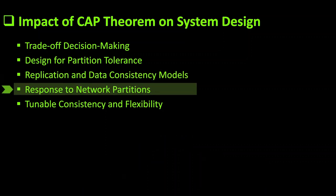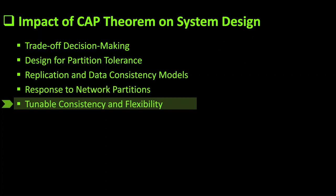Moving on to response to network partitions: systems must decide how to behave during network partitions. AP systems may continue to operate with potential inconsistencies, while CP systems may block or fail some operations to maintain data correctness. Lastly, it is tunable consistency and flexibility. Some distributed systems allow for tunable consistency, giving users the flexibility to choose the level of consistency versus availability based on specific use cases or operations. This flexibility is crucial for optimizing system performance in various scenarios.